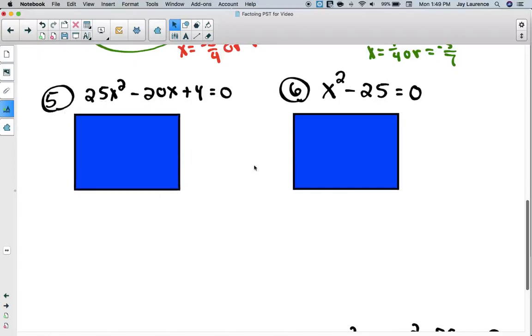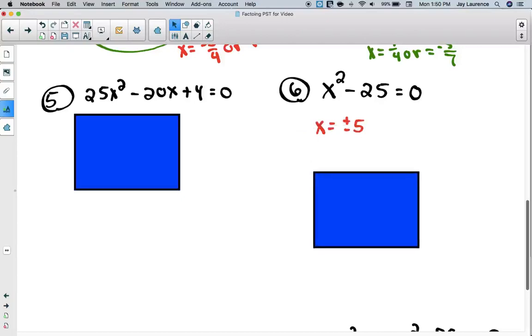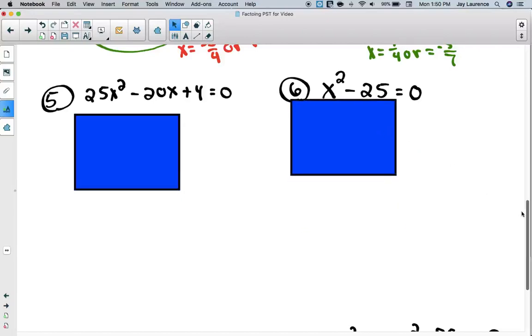On 6, again, if you haven't solved it, go ahead and do it. It's the difference of perfect squares. So you're going to get an x plus 5 in one quantity and x minus 5. That means there's going to be two answers, and you're going to get x equals plus or minus 5. Or you could write down x equals 5 or x equals negative 5. You need both answers for it to be correct.